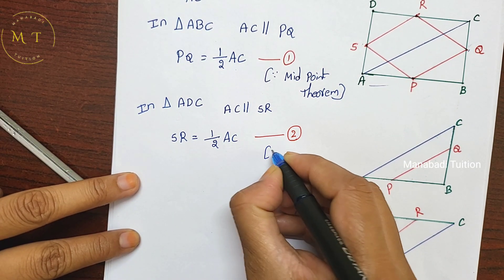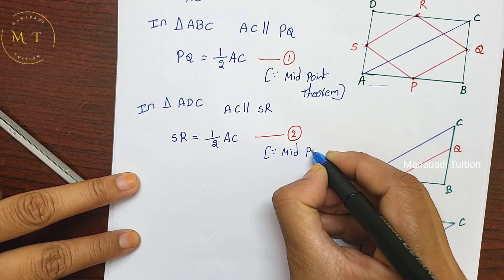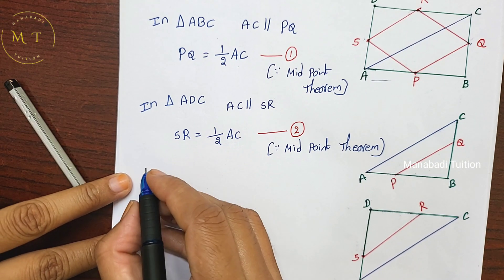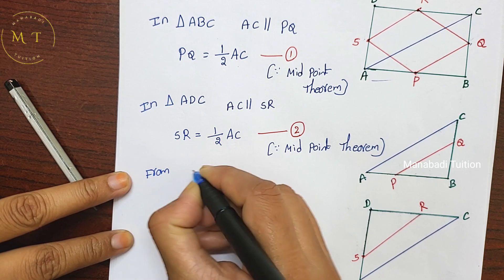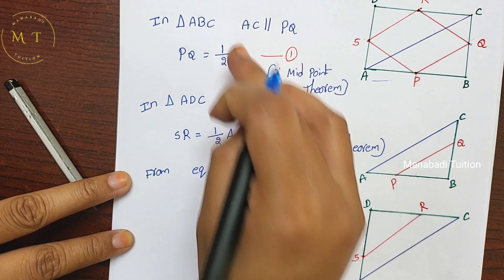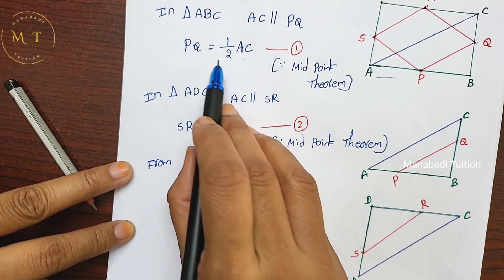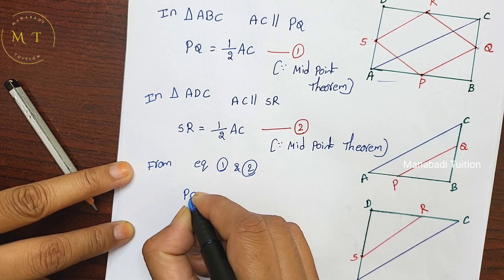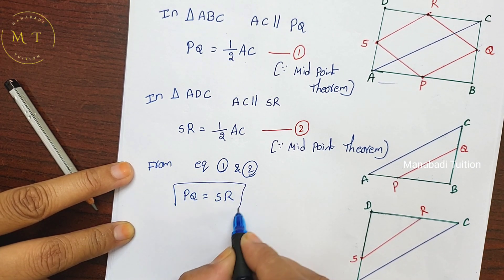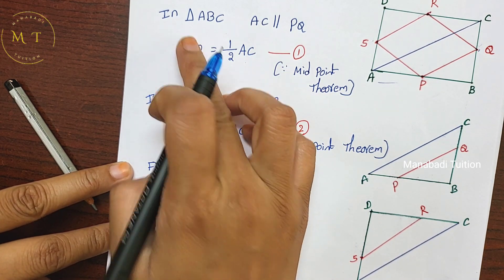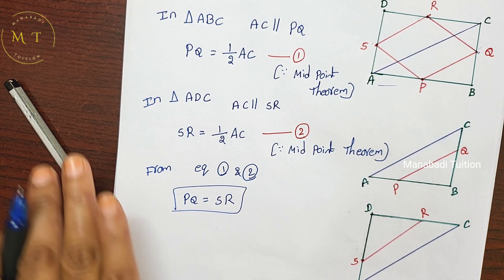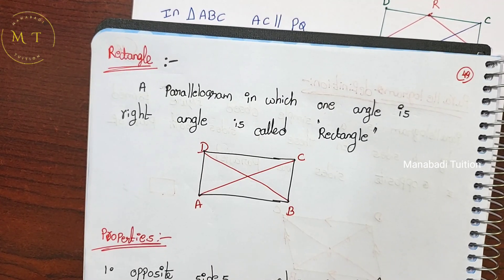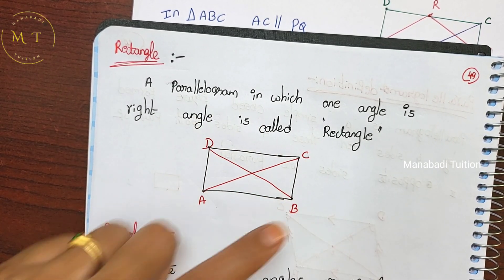From equations 1 and 2, since both PQ and SR equal half of AC, we get PQ equal to SR. The left-hand sides are equal because the right-hand sides are equal.